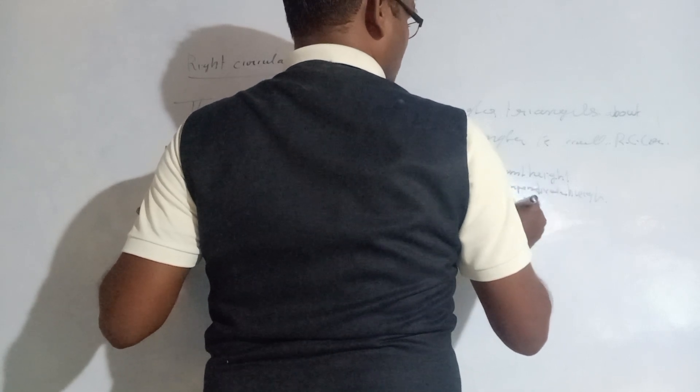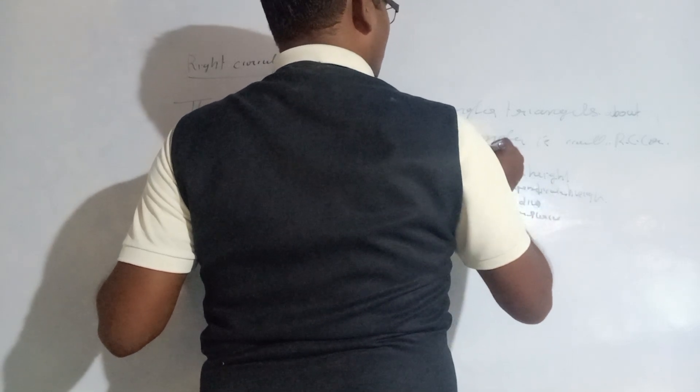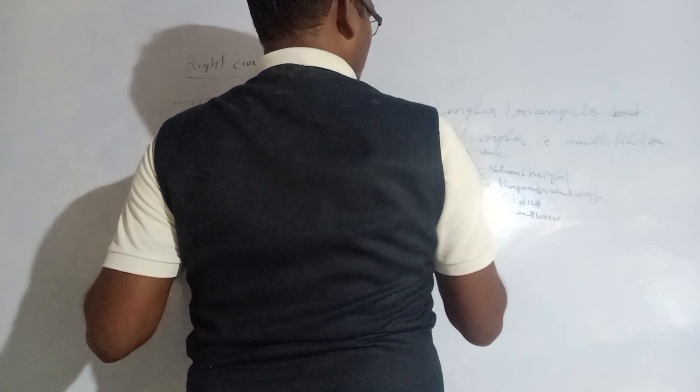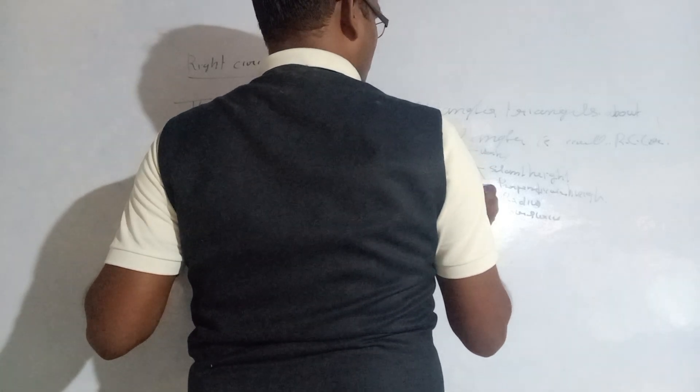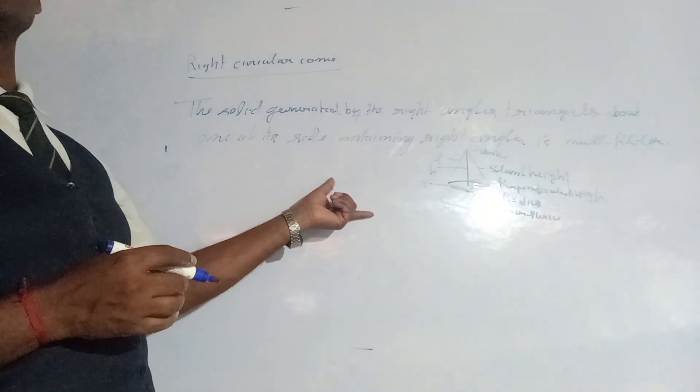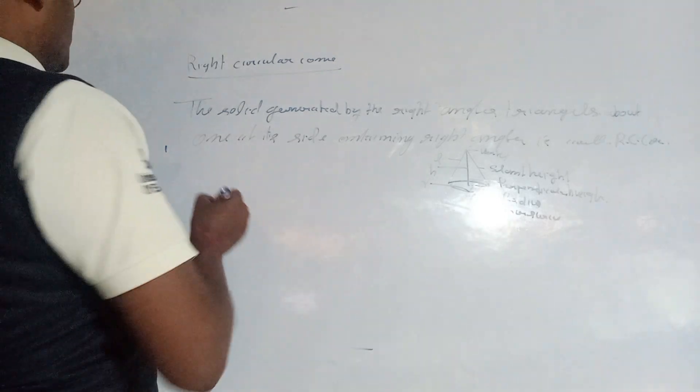This is the curved surface and the vertex. It is indicated by L for slant height, and r for radius. These are the figures with the alphabet for this figure.